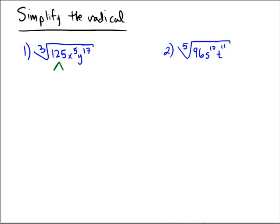So 125 breaks down into 5 times 25, and 25 breaks down into 5 times 5.